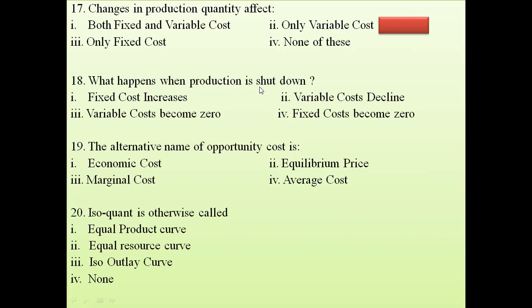Question 18: What happens when production is shut down? Fixed cost remains whether you are producing or not — it is always there, that is why we use the term 'intercept.' But if production is shut down, variable cost becomes zero. So the answer is variable cost becomes zero.